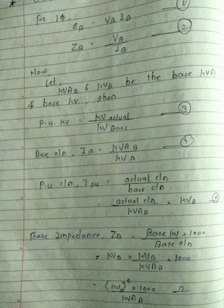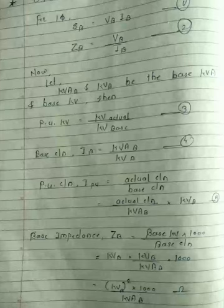For a single phase circuit, the formula of power is P equals V into I. Since power in power systems is apparent power, we use S. So we rewrite this as: S base equals V base into I base. This is expression number one.